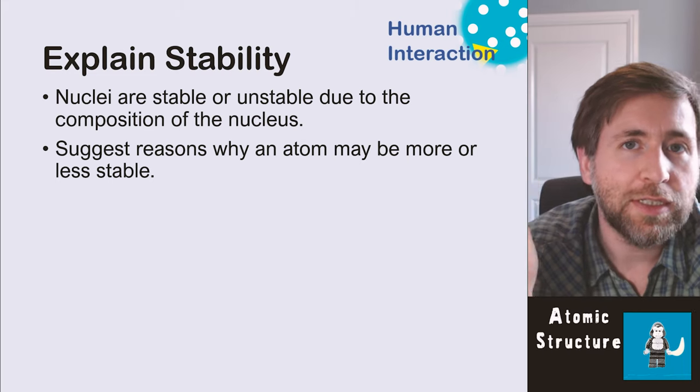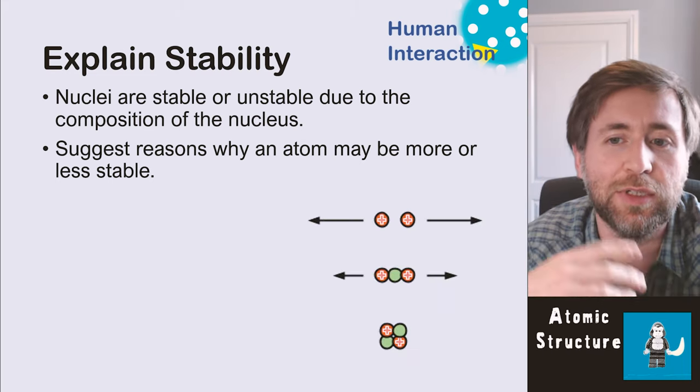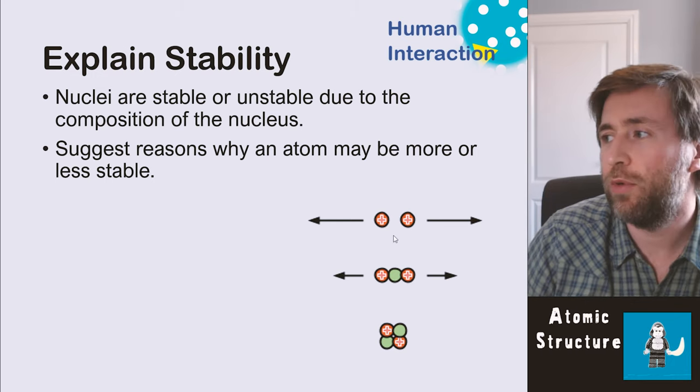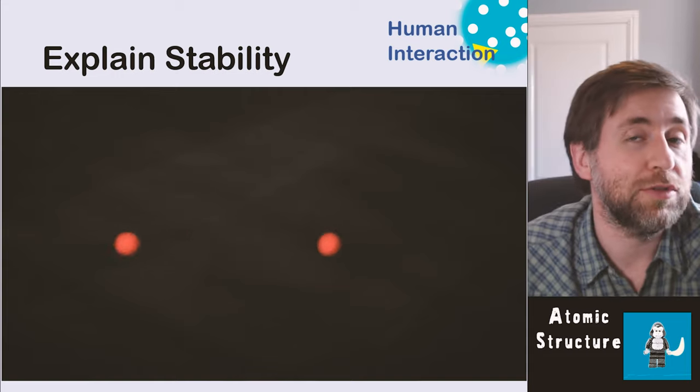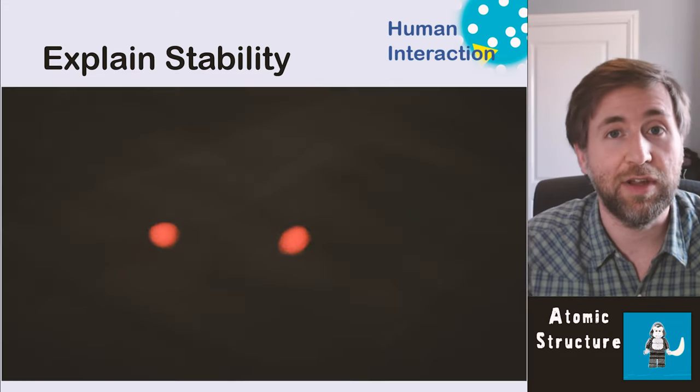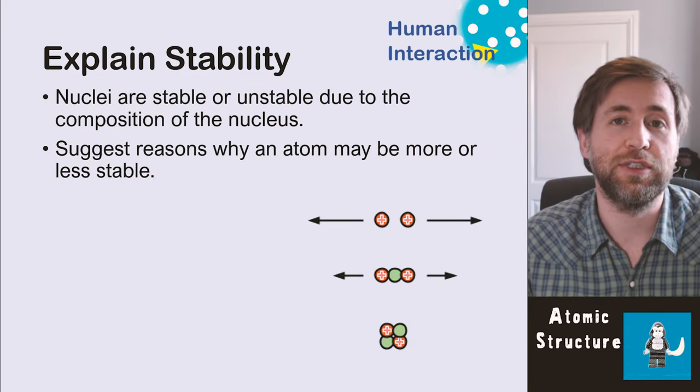Why is it? Why is one nuclei more or less stable than another? Well, let's just take our simple example. Let's take a helium, first of all, and a helium just made of two protons. What would that be like? Well, those two protons are positive, so they would repel one another. So that would be very unstable because they would spend hardly any time together. It would be a very unstable situation.